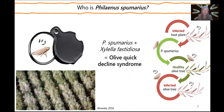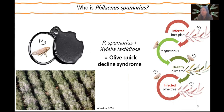But who is Philaenus? This common insect is native to Europe, but it became a threat to the continent after the introduction of the bacterium Xylella fastidiosa, which causes a disease in olive called the olive quick decline syndrome, the symptoms of which you can see in the picture. Philaenus spumarius acquires the bacterium from infected host plants and transmits it to healthy olive trees, which in turn become infected and need to be removed to avoid further spread of the disease.